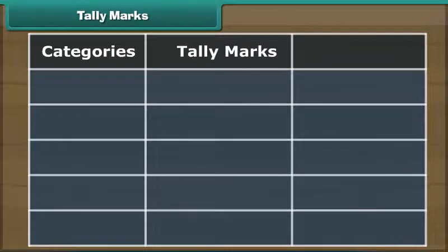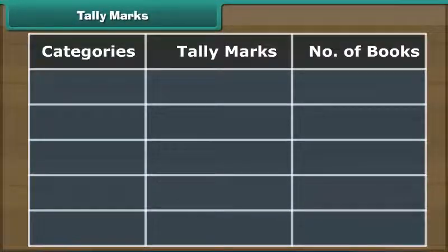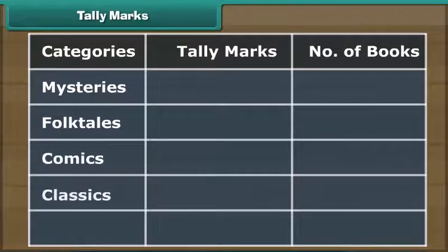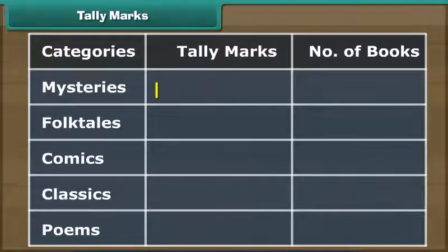Now let us organize Ravi's data with the help of tally marks. Make three columns: categories, tally marks, and number of books. Write down the five different categories under the categories column. Draw a vertical line against the mysteries category under the tally marks column.